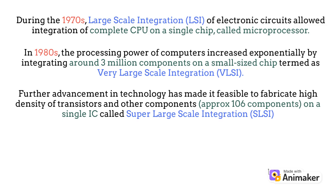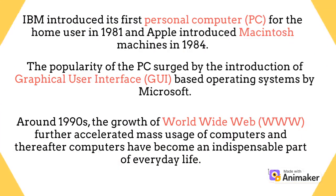Further advancement in technology made it feasible to fabricate a high density of transistors and other components — approximately 10⁶ components — on a single IC, called super-large-scale integration (SLSI). IBM introduced its first personal computer (PC) for the home user in 1981, and Apple introduced Macintosh machines in 1984. The popularity of the PC surged with the introduction of graphical user interface (GUI) based operating systems by Microsoft.